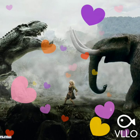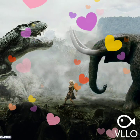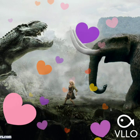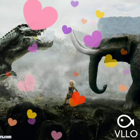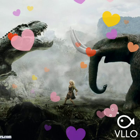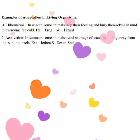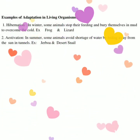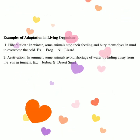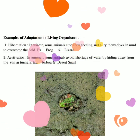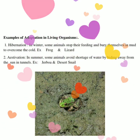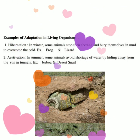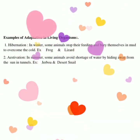Finally, adaptation to environment: some animals could not interact with changes in the surrounding environment — like dinosaurs — and died out, while other animals adapted and continued life. For example, hibernation: in winter, some animals stop feeding and bury themselves in mud to overcome low temperatures, such as frogs and lizards.